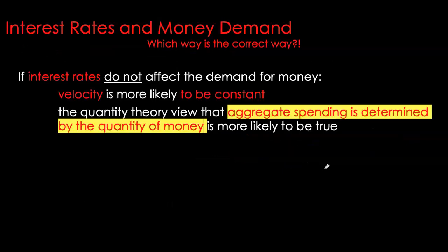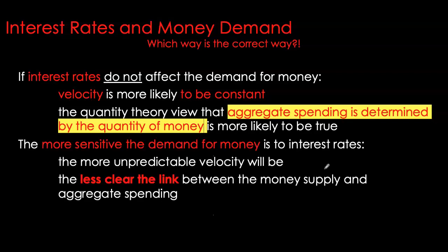We saw two different types of money demand functions. In one, interest rate does not affect money demand at all — that is the money demand from the quantity theory of money, where velocity is assumed to be constant. Alternatively, we have a money demand function that is very sensitive to interest rate fluctuations, and therefore velocity is no longer constant, which collapses the linkage between money growth and inflation.